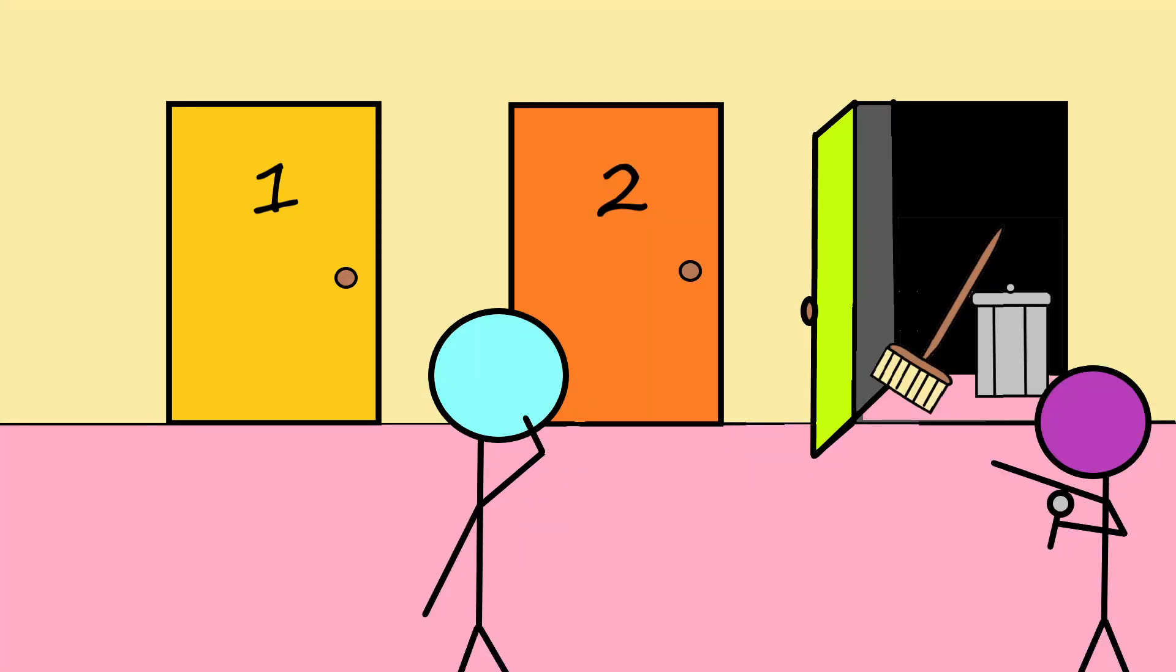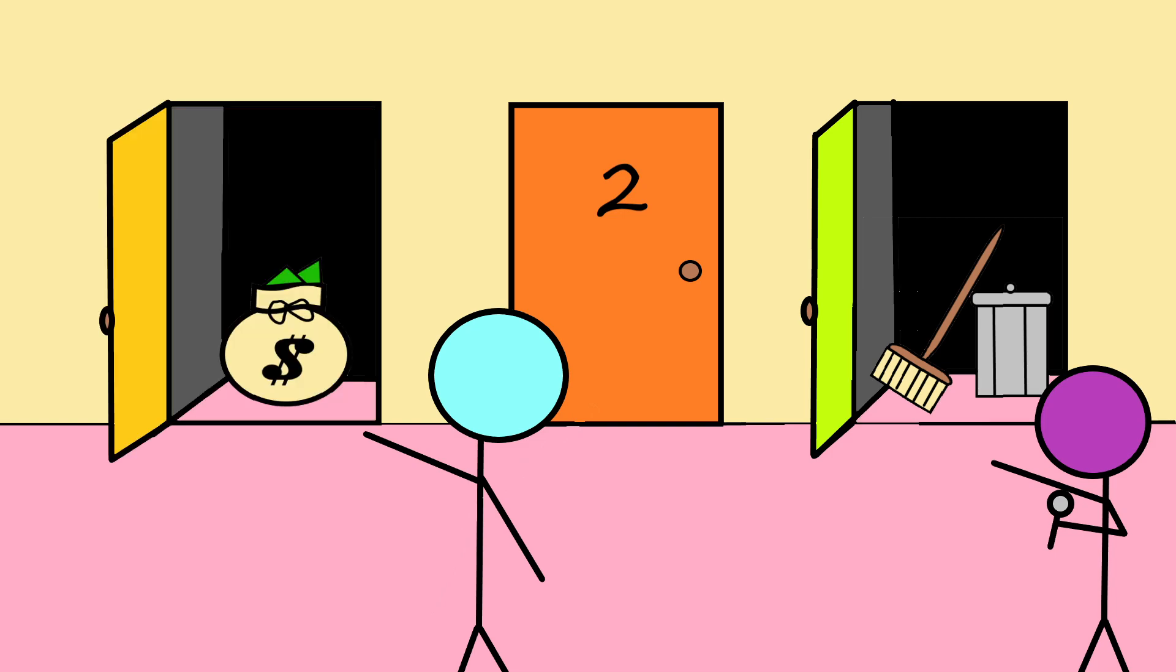Well, it turns out that you should. This is because you still have a one-in-three chance that your first choice was right, and hence a two-out-of-three chance that it's wrong. That fact doesn't change when the host shows you that one of the two remaining doors has junk behind it. Thus, you have a two-in-three chance that the prize is behind the door that you didn't pick. That is, the remaining door is twice as likely to have the prize behind it than the door that you originally picked.